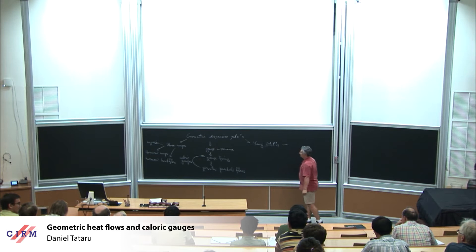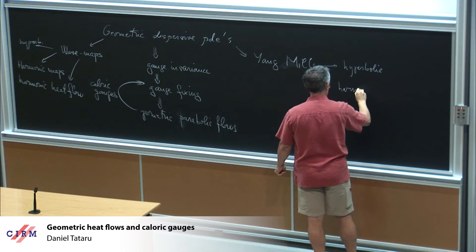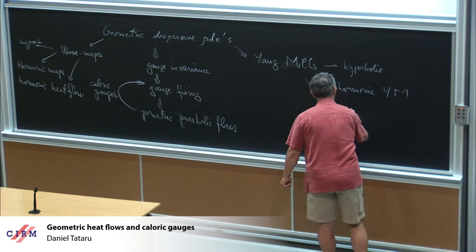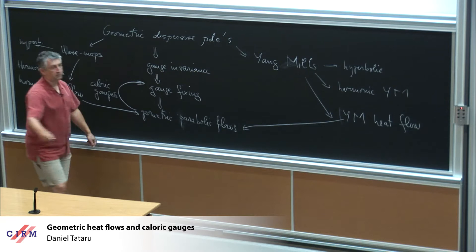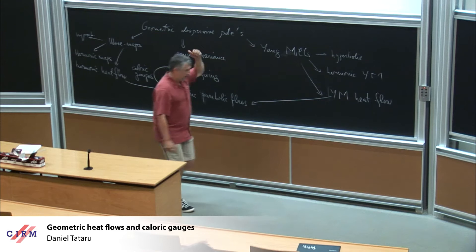The picture is reflected here. So here, this is a hyperbolic equation. But you also have the corresponding elliptic equation, the harmonic Yang-Mills equation, and also the corresponding parabolic equation, the Yang-Mills heat flow. These two heat flows will be the parabolic flows that I'm going to tell you about. This is the picture that I'll try to keep on the board for as long as possible, hopefully for the rest of the talk.